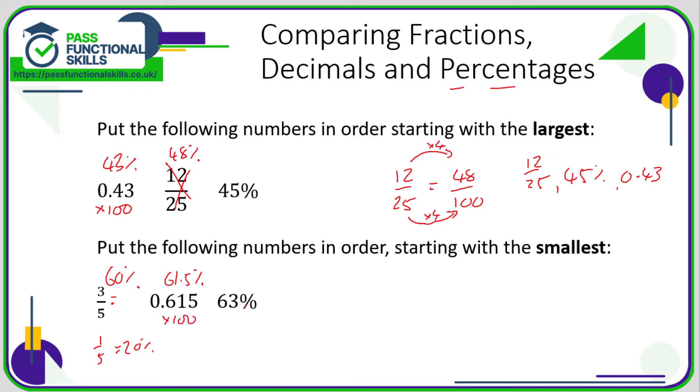So the smallest is 60 percent, so the smallest is three fifths, the next smallest is going to be the 0.615, and then the largest is the 63 percent. So as you can see, very easy if you convert everything into percentages.